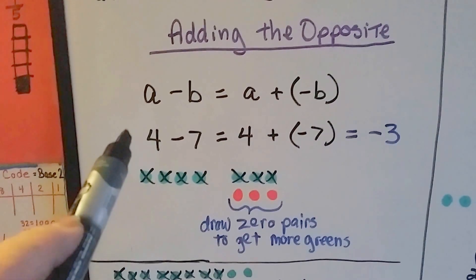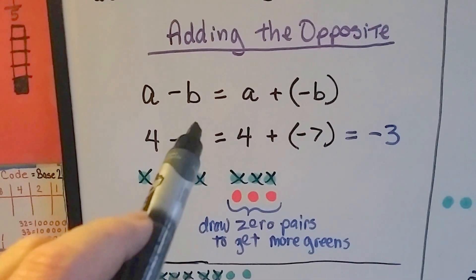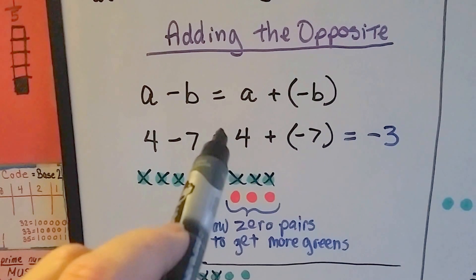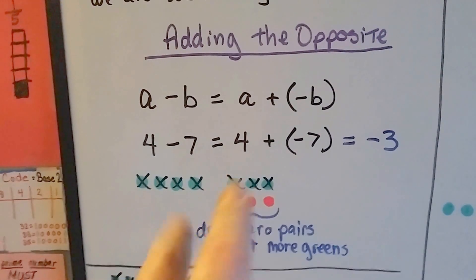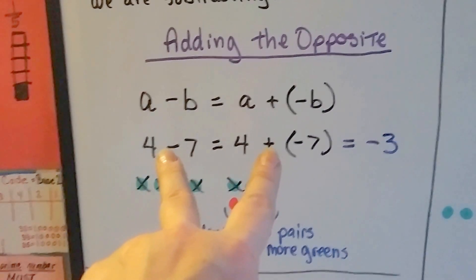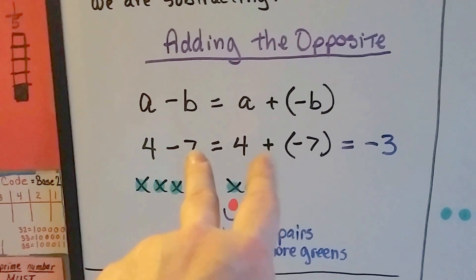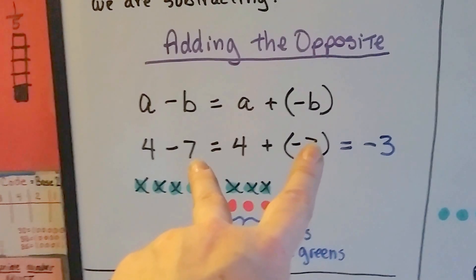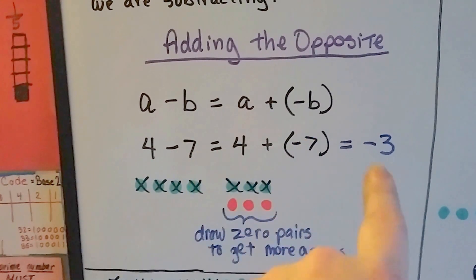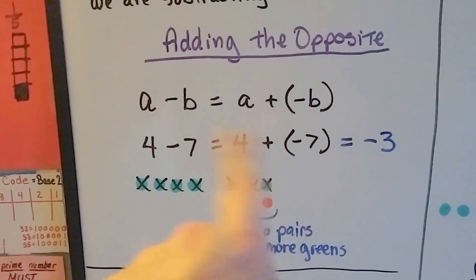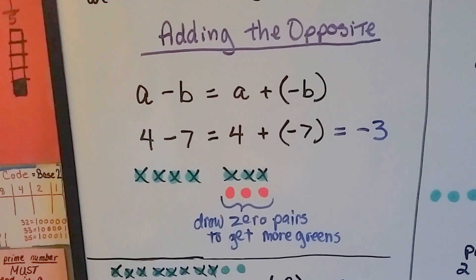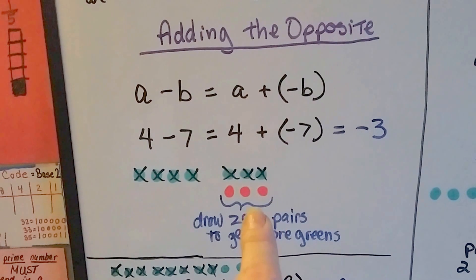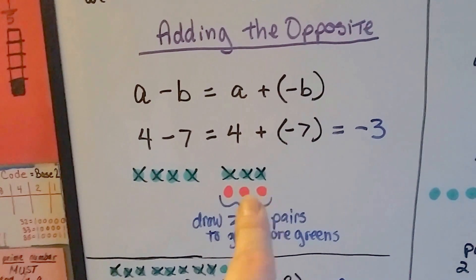With numbers, to make it make sense: we have 4 take away 7, and it's the same thing as 4 plus a negative 7. We use the complete opposite sign, and the positive 7 becomes a negative 7. It's the same thing — we're still going to get negative 3, because we'll have added zero pairs and end up with 3 negative ones left over.